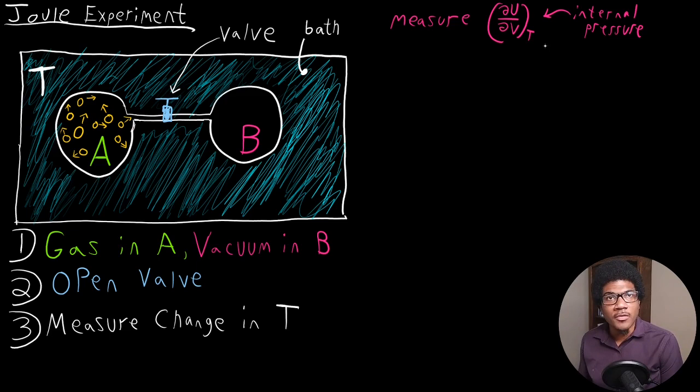So the Joule experiment's main goal was to try to measure this internal pressure for an expanding gas. So how did he do that?